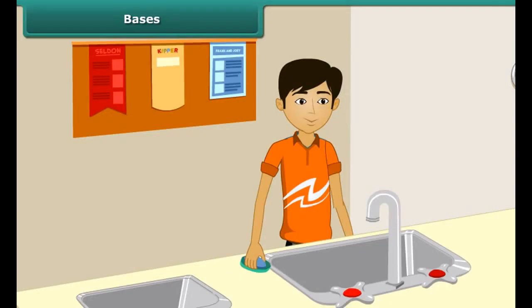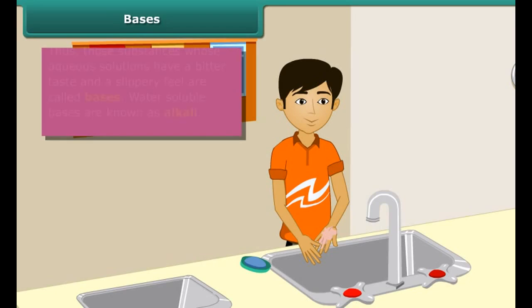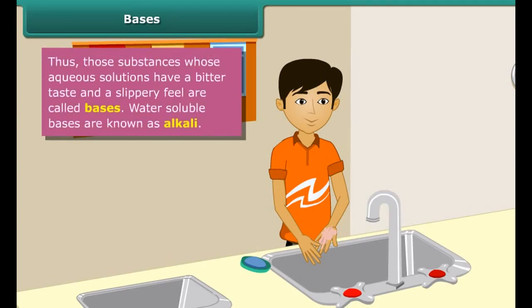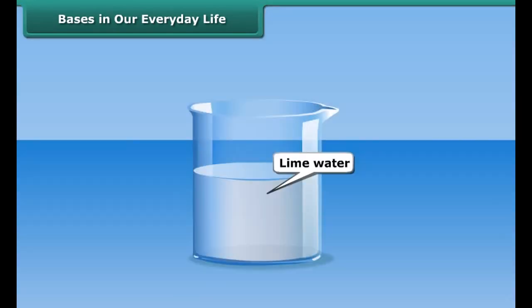We wash our clothes every day with soap — do you know which kind of solution it is? Soap solution tastes bitter and on rubbing on the palm gives a slippery feeling, because it contains a base. Those substances whose aqueous solutions have a bitter taste and a slippery feel are called bases. Soluble bases are known as alkali.